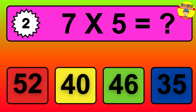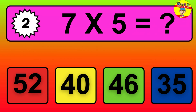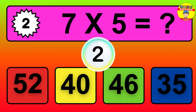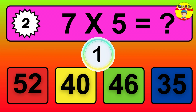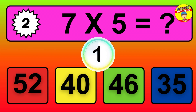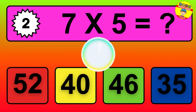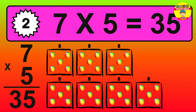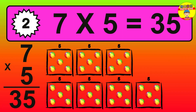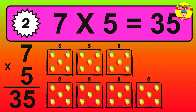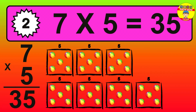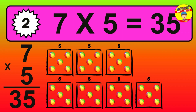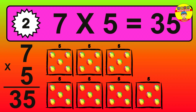Question 2. 7 times 5 equals what? The answer is 7 times 5 is 35. To calculate, we have 7 groups with 5 balls each one. So, how many balls do we have? 35 balls.